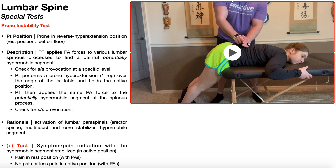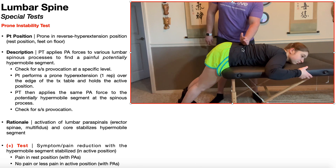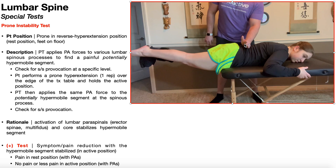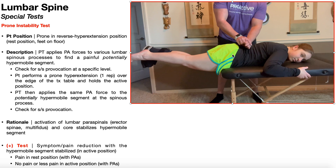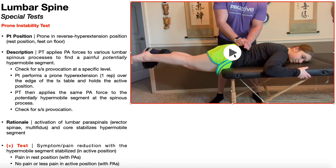Once the appropriate segment is identified, the patient performs one repetition of a prone hyperextension over the edge of the table and holds that active position. The hand stays on the hypermobile segment throughout. If the patient is strong enough they can keep their knees straight, but bent knees are perfectly acceptable. Once they're in this active position, the same PA force is applied to that hypermobile lumbar segment, and the clinician checks for symptom provocation — particularly pain.